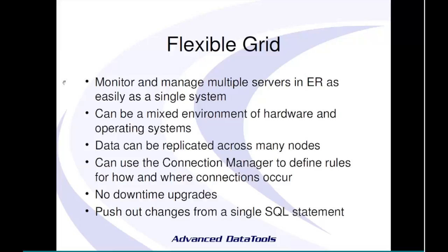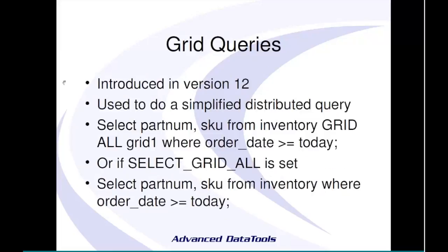Grid queries, introduced in version 12, allow you to put the SELECT statement with 'grid' and actually query across all grid components in a single query. It performs the equivalent of fragmentation elimination — segment elimination — and only pulls from the places it needs to. This reduces the number of reads and network traffic. In the 20-Cubieboard cluster example, a single query goes out and reads from all 20 systems in parallel — 30 disks and 40 CPUs all processing simultaneously to return data as fast as possible.